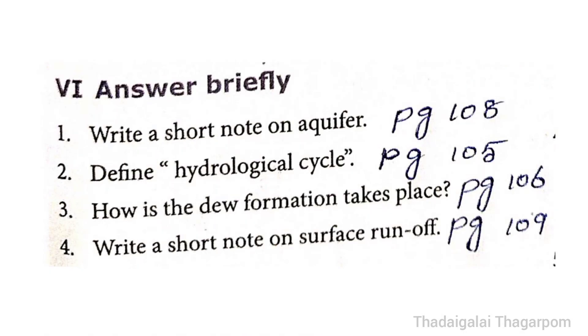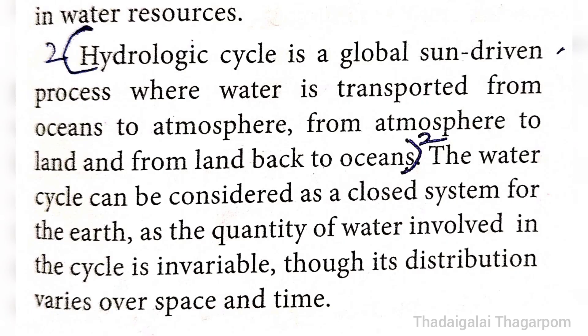2nd question: Define Hydrologic Cycle. The answer is given in page number 105, under the heading 'Hydrologic Cycle or Water Cycle', 2nd paragraph, first 4 lines. Hydrologic cycle is a global sun-driven process where water is transported from oceans to atmosphere, from atmosphere to land, and from land back to oceans.